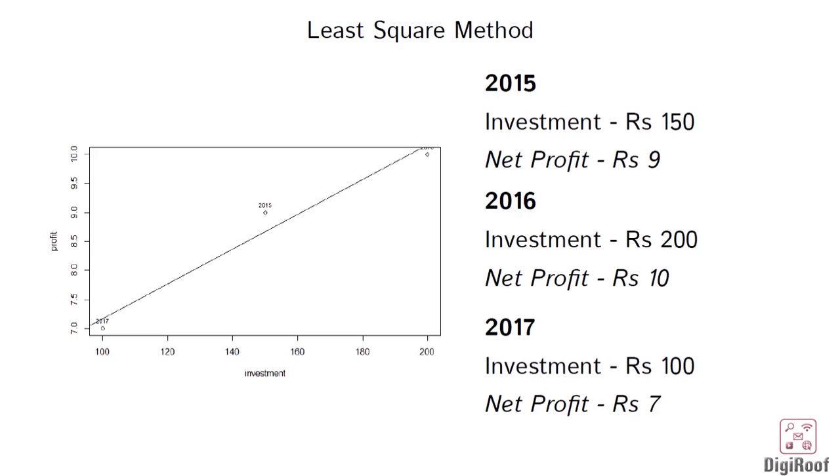We have already understood the reason we want this line. Once we have it, we would be able to get the corresponding value of response variable that is profit for any given value of predictor that is investment. The way to make the line using these random points requires the use of least square method.